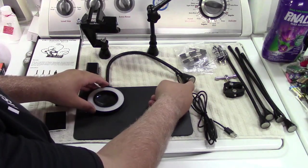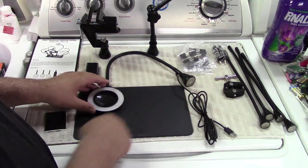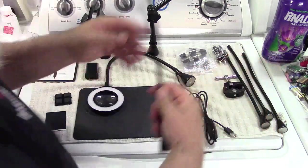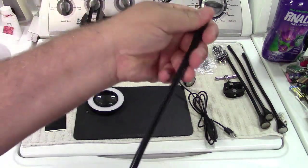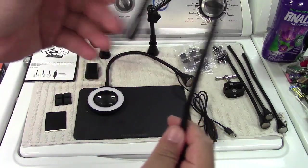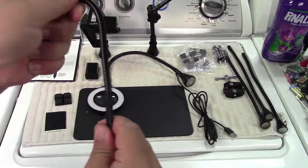Everything here is going to be magnetic to go on to the base. They give you four of these guys over here. As you see, they're all bendy, gooseneck design, any angle that you need, just like that. Very simple.